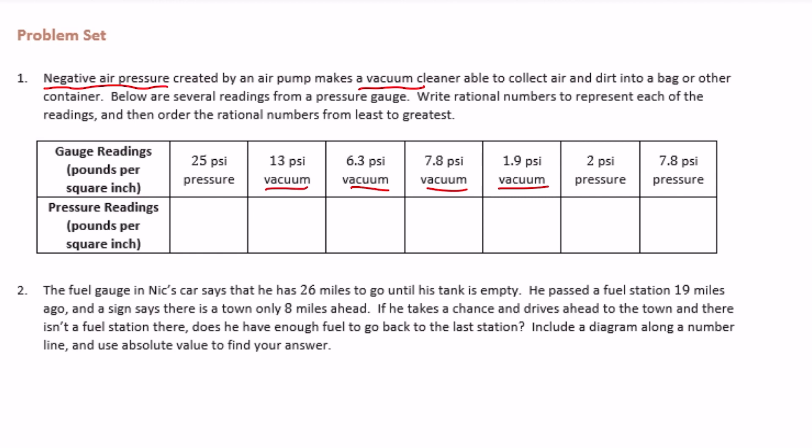So 25 psi or pounds per square inch would just be 25. 13 psi vacuum is negative 13. Six and three-tenths vacuum would be negative six and three-tenths, negative seven and eight-tenths, negative one and nine-tenths, and then the last two are positive.